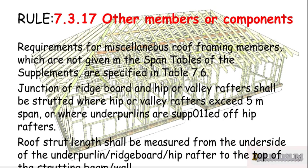Rule 7.3.17 is a general rule that covers members that aren't listed in the Code or in the rules by themselves. It covers requirements for miscellaneous roof framing members which are not given in the span tables of the supplement — those are specified in Table 7.6. There's some information there about the junction of the ridge and hip and valley rafters, but we're not too worried about those as there's nothing there that specifically talks about Collar Ties.